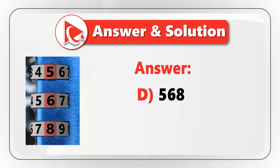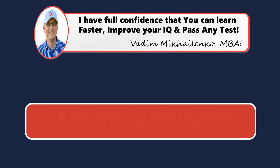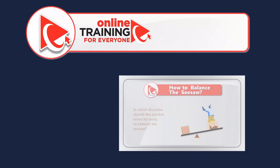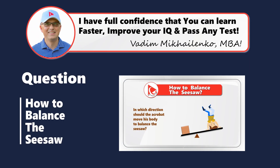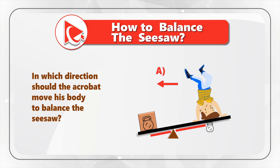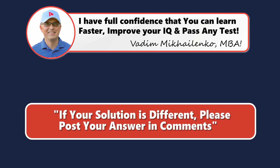Based on this, the correct answer is choice D: 5, 6, 8. Do you have any hints on how to best solve these types of challenges? If you do, please make sure to post them in comments. Now I have a question for you to practice your skills. You are presented with a seesaw. On the left there is a weight, and on the right side there is an acrobat. You need to determine in which direction the acrobat should move his body to balance the seesaw — choice A to the left, or choice B to the right. Please post your answer in comments so I can give you my feedback. Thanks for participating and good luck!